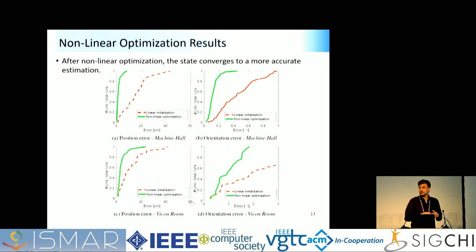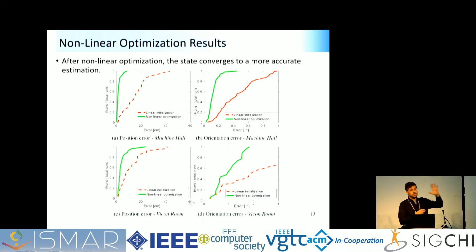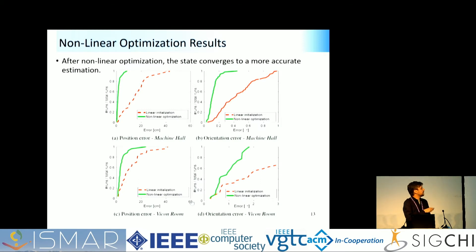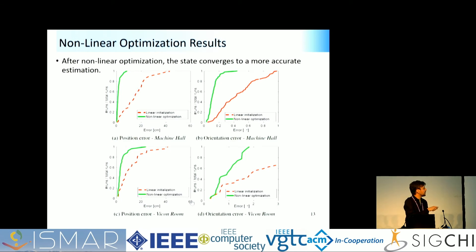Regarding the nonlinear optimization results: the experiment shows that starting from the initial seed, nonlinear optimization achieves a better solution. This is shown as a cumulative histogram — x-axis is error in centimeters, y-axis is the percentage of cases with error under that value. The further left the curve, the better. You can see that from the initial seed errors, nonlinear optimization shifts the curve significantly to the left.